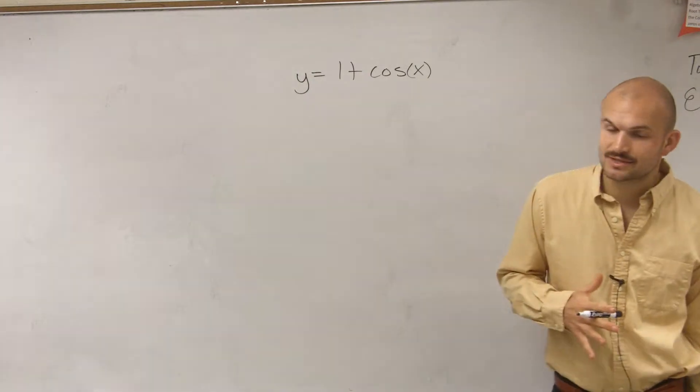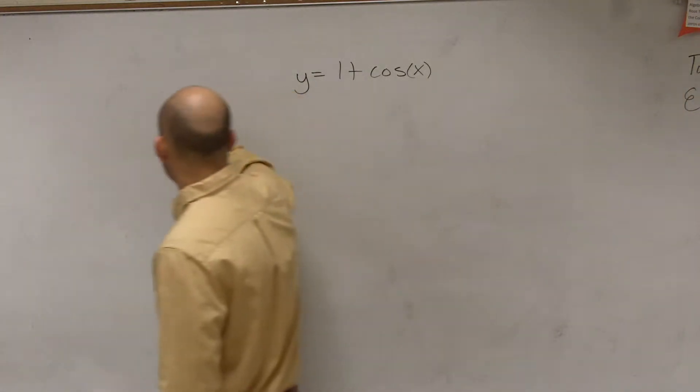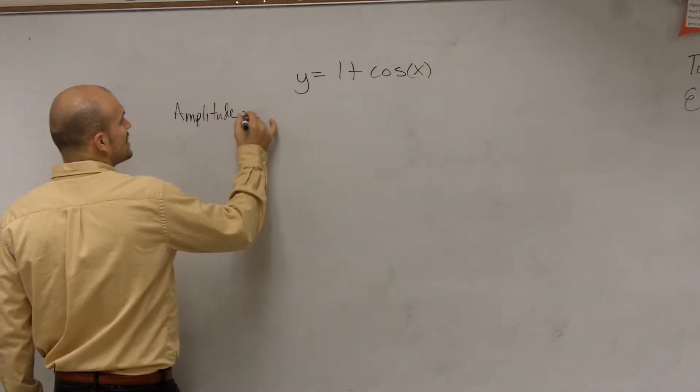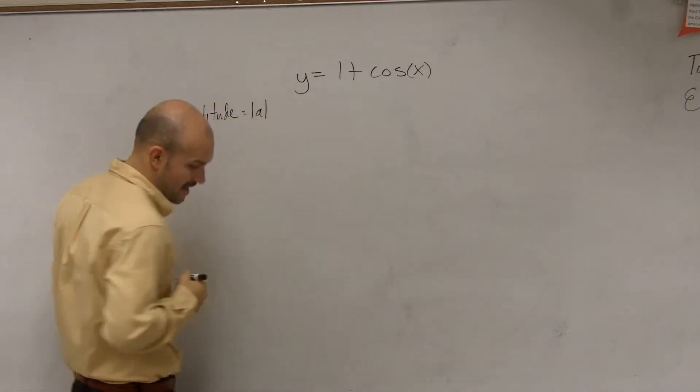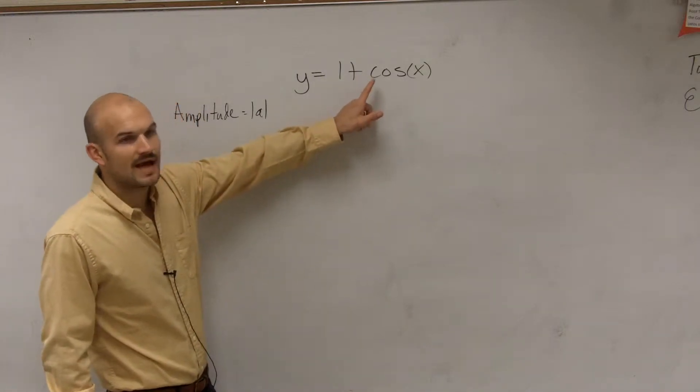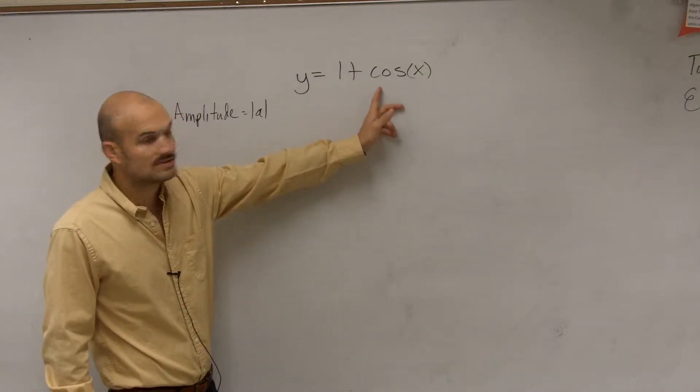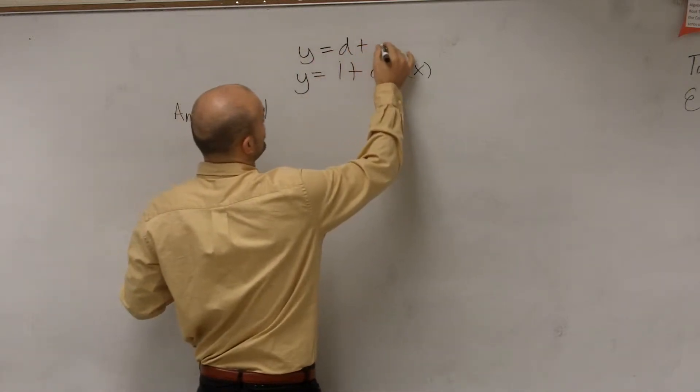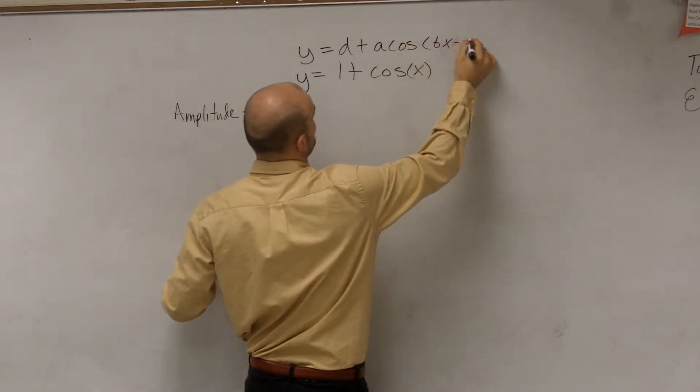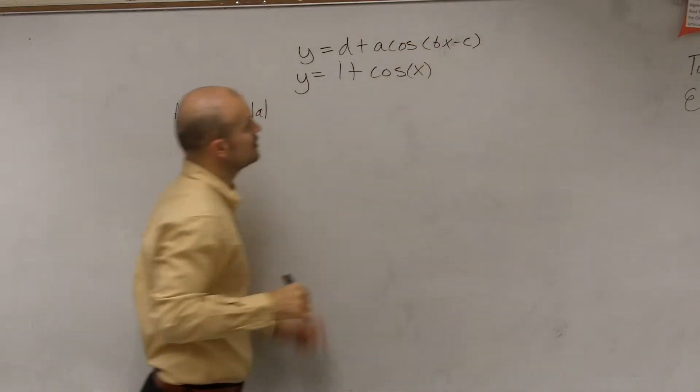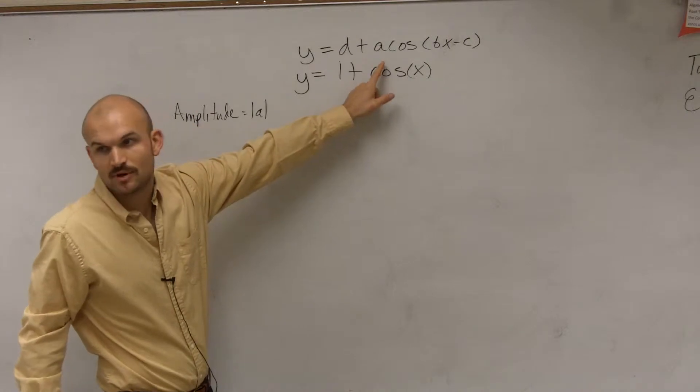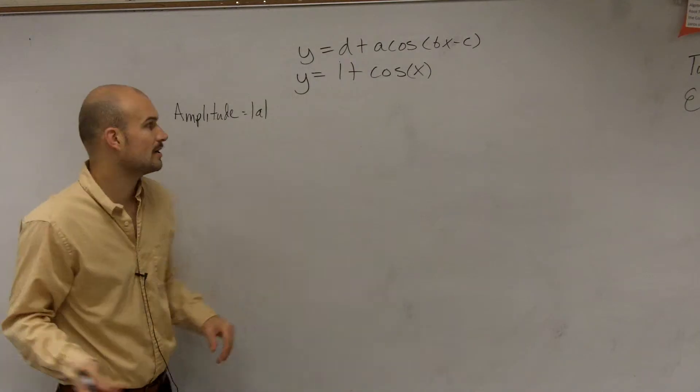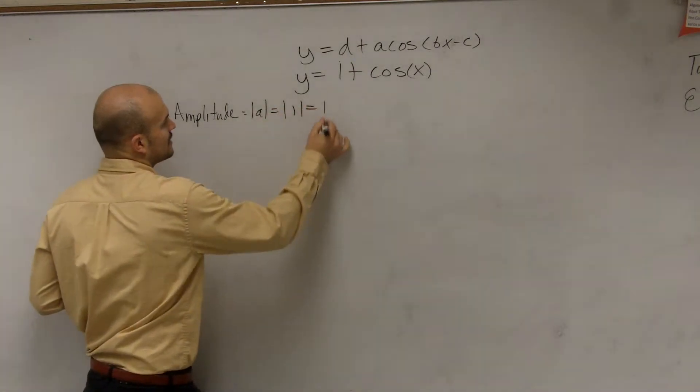The first thing I think the easiest one to find is always our amplitude. So remember, amplitude is going to represent the absolute value of a. Well, remember, a is going to be your value that's being multiplied by your cosine of a. If you guys remember the parent function of our graph, which was d plus a times cosine of bx minus c. So a is going to be the value that's being multiplied by cosine. Well, in this function, our a is going to be what? 1, right?